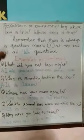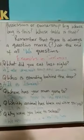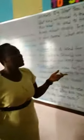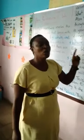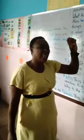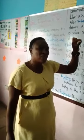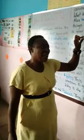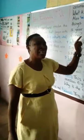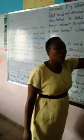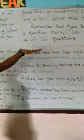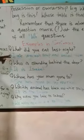Number seven: WHOSE — this is used to show possession or ownership, what belongs to someone. For example, 'Whose bag is this?' and 'Whose table is that?' Now remember, there is always a question mark at the end of all WH questions. The first letter W is written in capital letters, and at the end of the question there is a question mark.